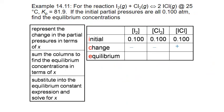We don't know the amount to add or subtract yet, so we represent it with variable X. For this reaction, every one mole of iodine and one mole of chlorine react to produce two moles of iodine monochloride. So for the reactants we have minus one X, and for the product we have plus two X.